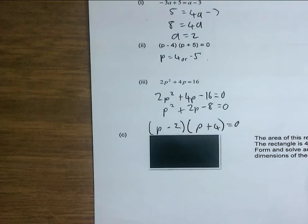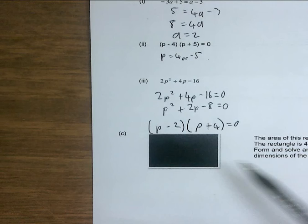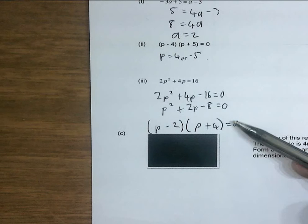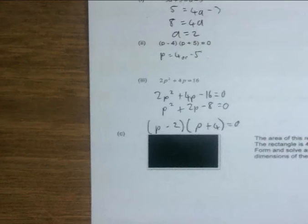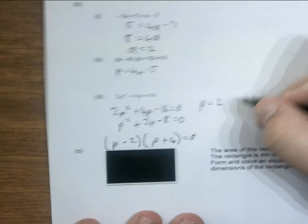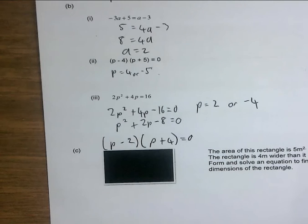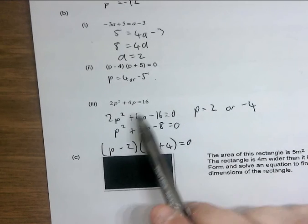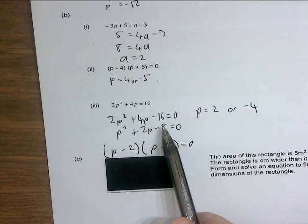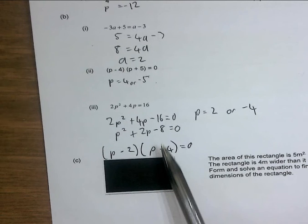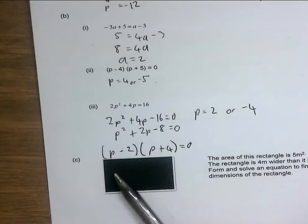The two numbers are negative 2 and positive 4 — the 2 is negative because the sum is positive. If it were negative 4 and positive 2, the middle term would be negative 2p. So the factorized quadratic is (p − 2)(p + 4) = 0. Making each bracket zero gives p = 2 or p = negative 4.